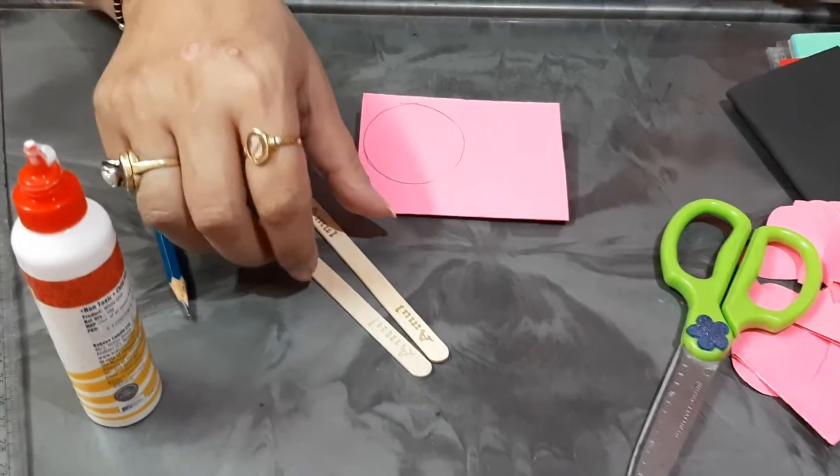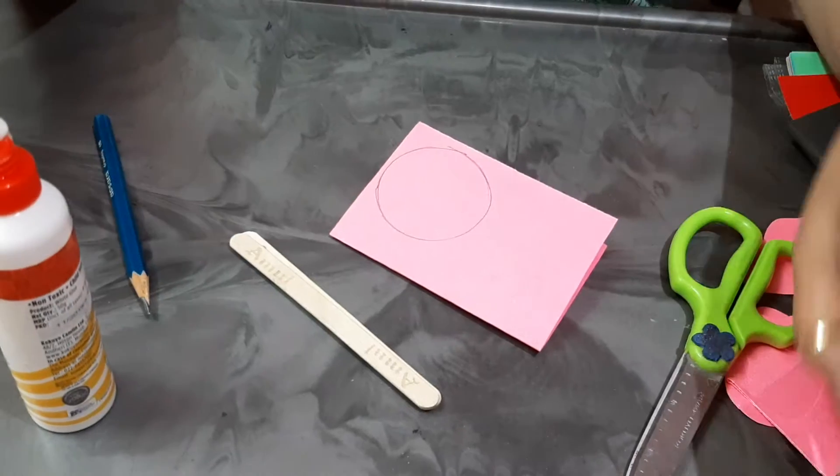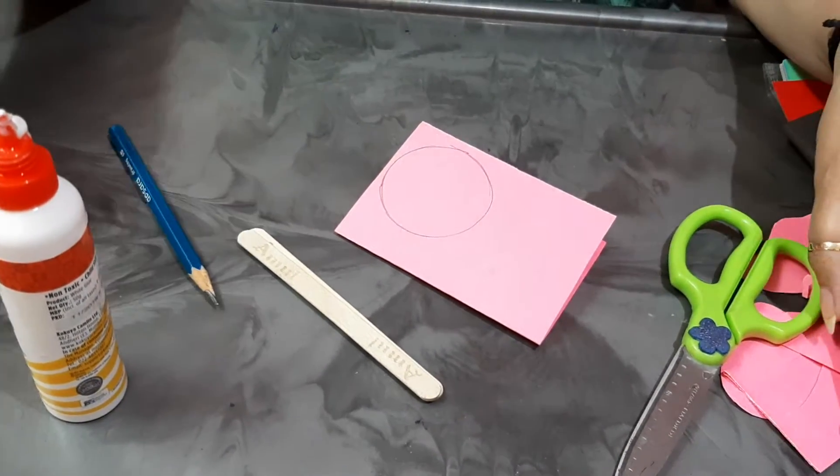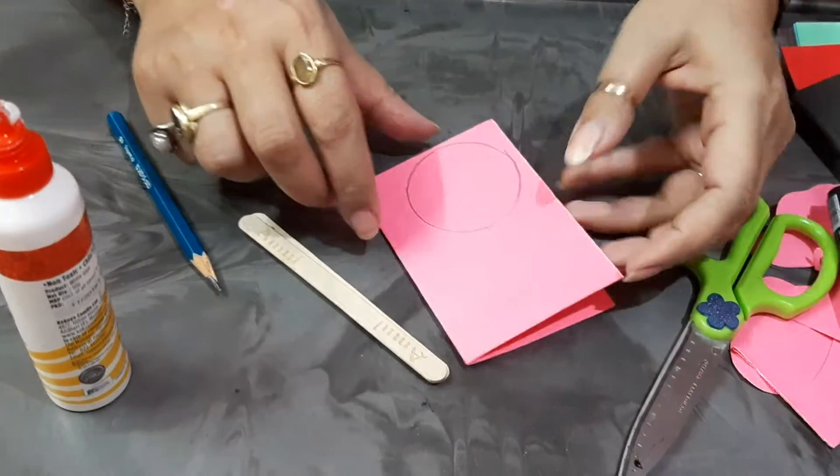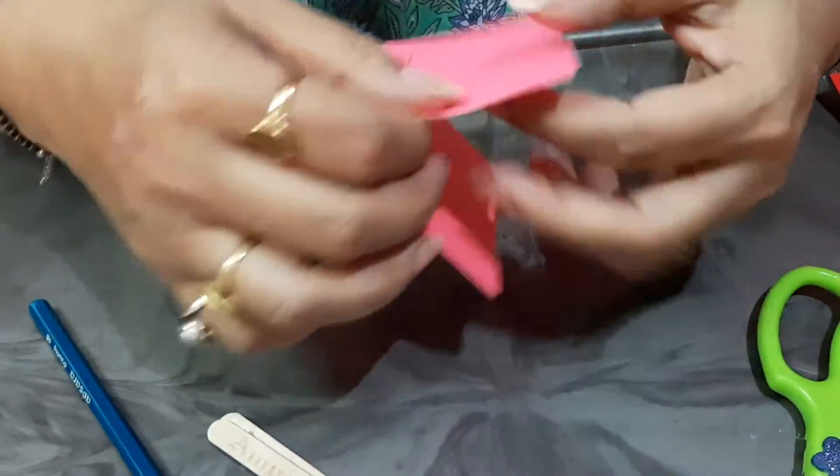See I have too many materials. Popsicle sticks, ice cream sticks, scissor, black marker, pencil, Fevicol. First we have a small popsicle sheet and make one circle.